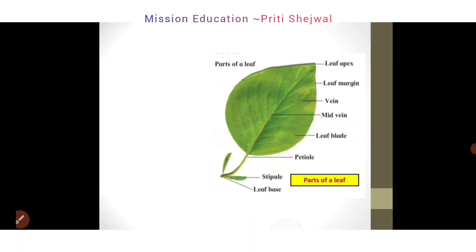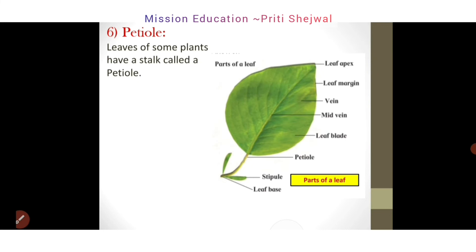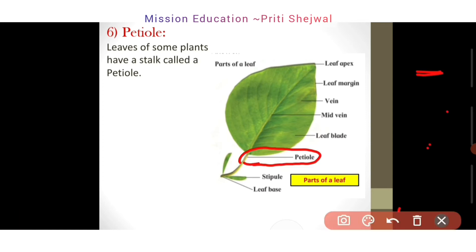The sixth one is petiole. What is petiole? Leaves of some plants have a stalk called a petiole. In this figure, where is the petiole located? The petiole is located here on this side.